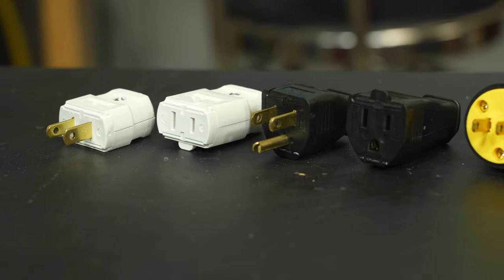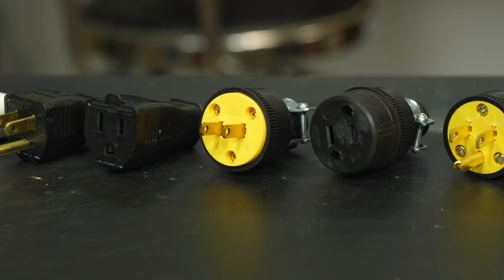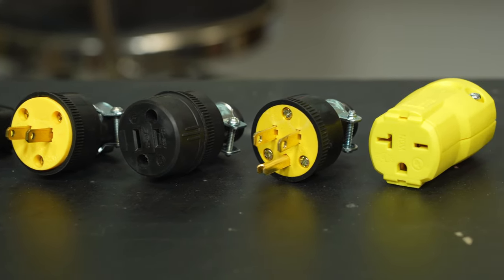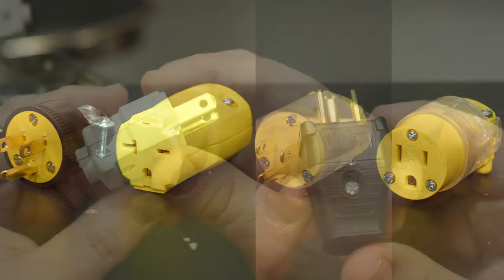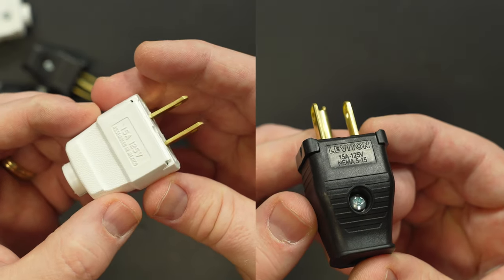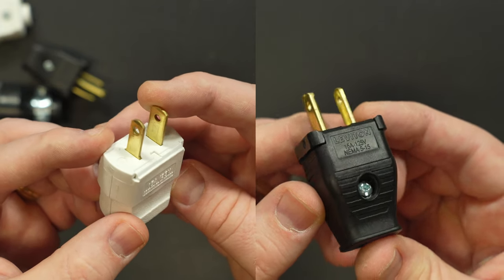So for demonstration purposes I bought a variety of different ends at my local hardware store and I want to go over some of the important distinctions and differences between them so you know kind of what to look for when you're going to buy the end that you need for your cord. For instance here in North America there are basically two kinds of plugs that will be most commonly repaired this way.